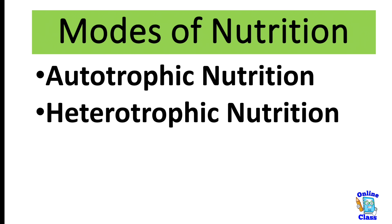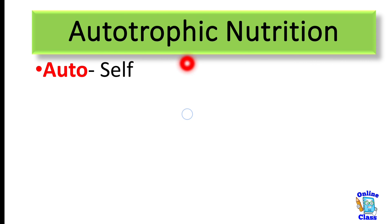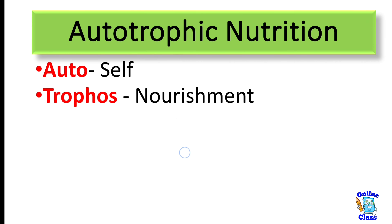What do you mean by autotrophic nutrition? You need to look at the word and break it down to get the meaning. Auto means self and trophic means nourishment. So self-nourishment — the organisms that nourish themselves, that prepare their own food — they are called autotrophs.